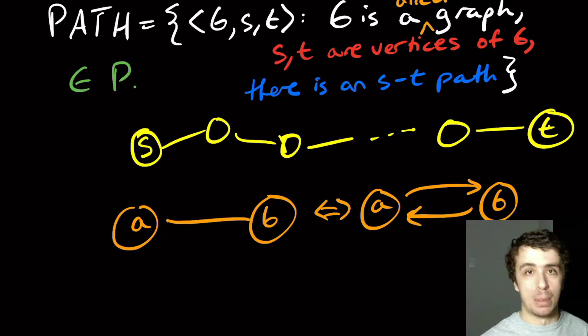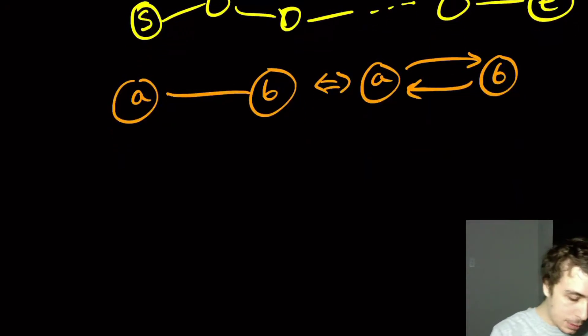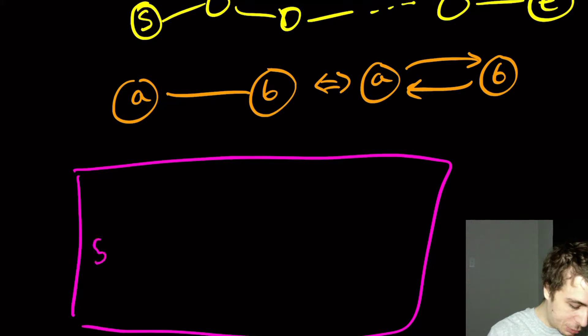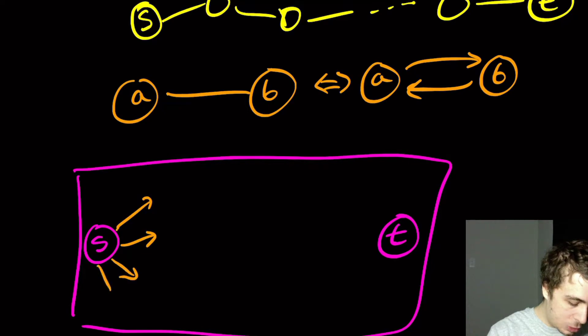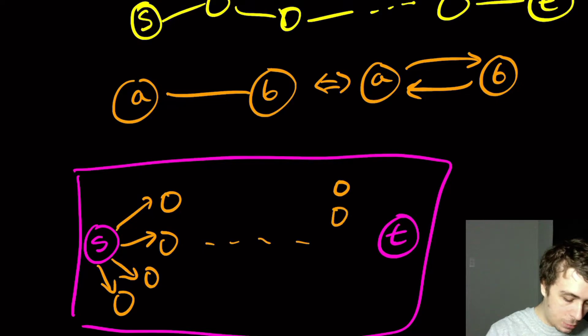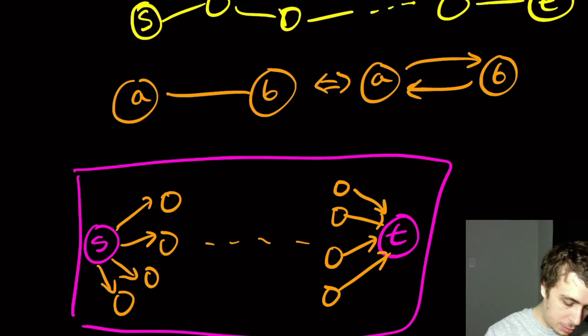So how do we actually solve the path problem? Well, if you know any graph traversal algorithm, you're already done. So I'll just show this with a picture. Let's say that S is right here, and let's say T is way over here. Then S may have a bunch of directed edges to a bunch of nodes here, and then there may be a bunch of nodes that go to T. And maybe T has other ones going out and some going into S.